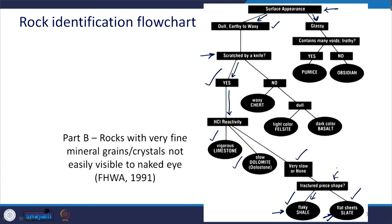If they are not scratched by a knife — if it is waxy, it is chert; if the appearance is dull, then check the color: if it is light-colored, it is felsite; if it is dark-colored, it is basalt.